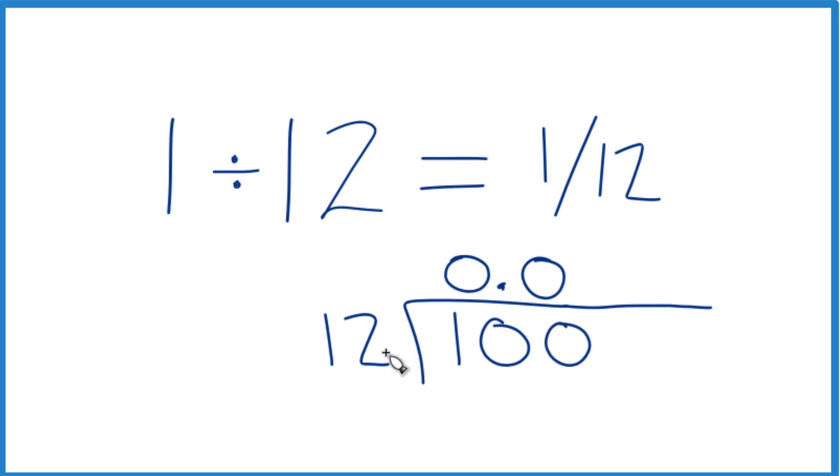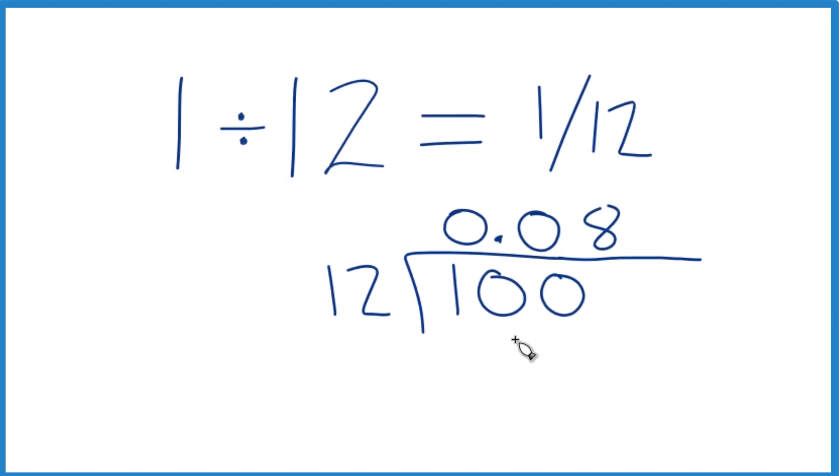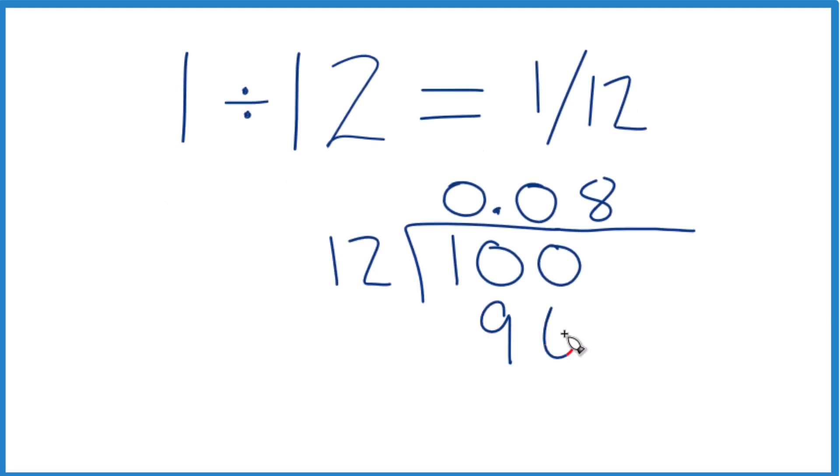So 9 times 12 is 108. That's too big. 8 times 12, that's 96. So that works. Subtract, and we get 4.